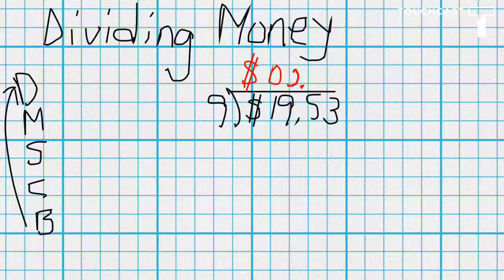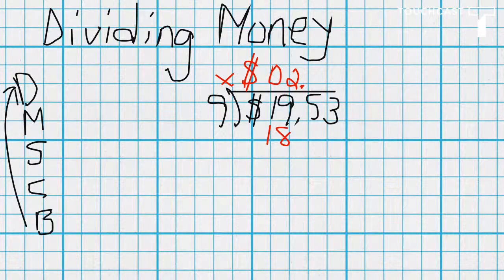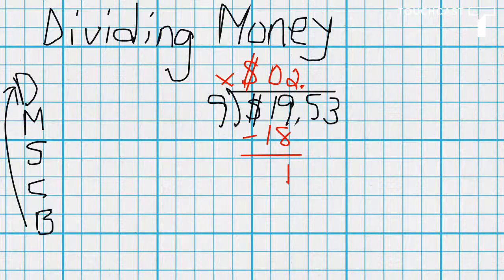So nine can go into nineteen two times. We're going to write the two in the quotient, next we're going to multiply the two times the nine which is eighteen. Then we subtract like we normally do and then we compare, one is less than nine, so we bring down.